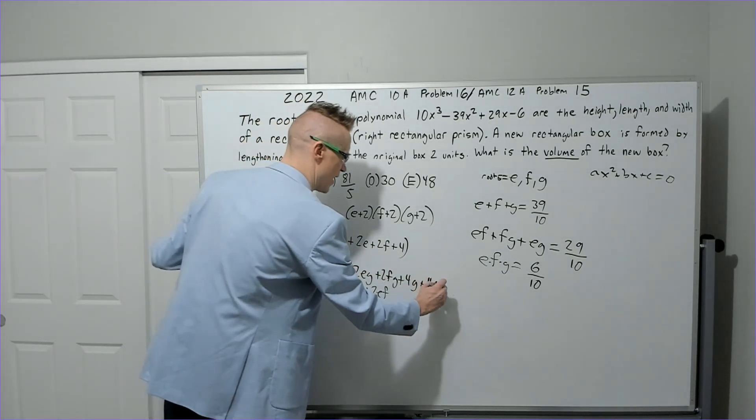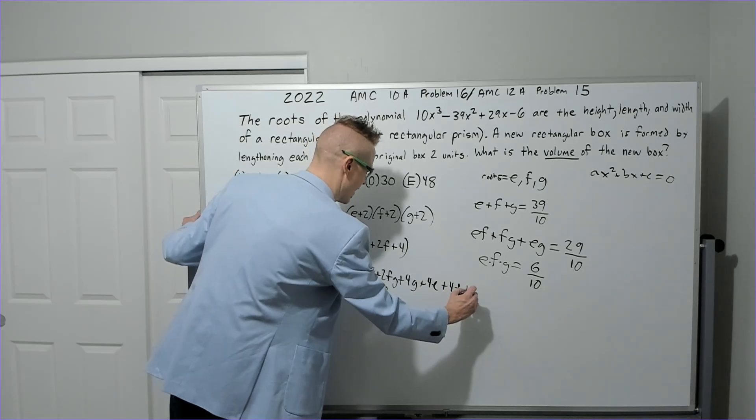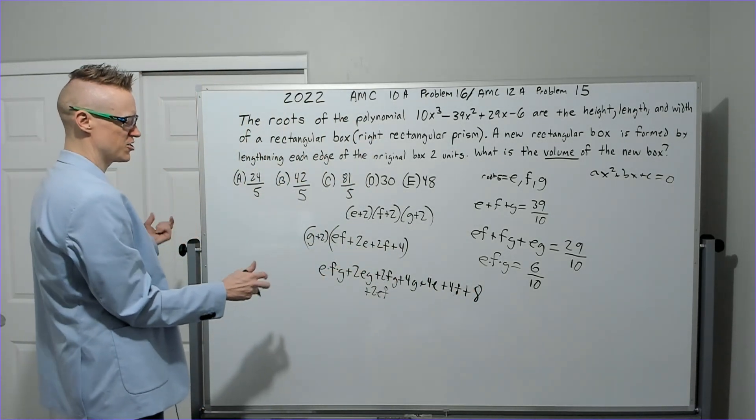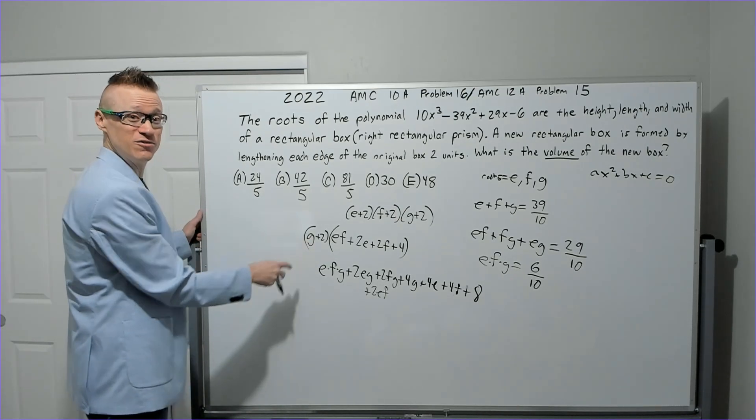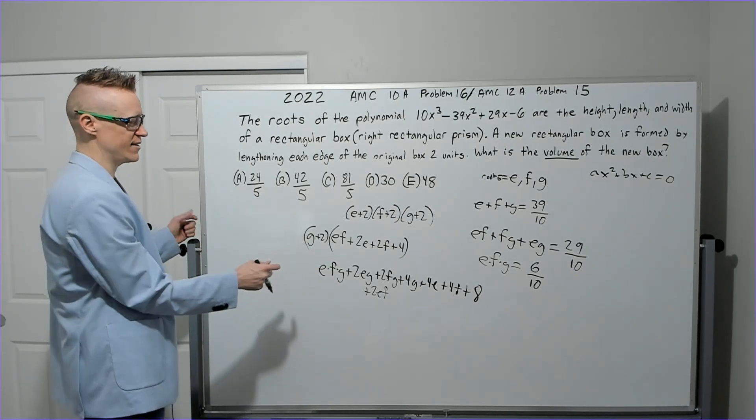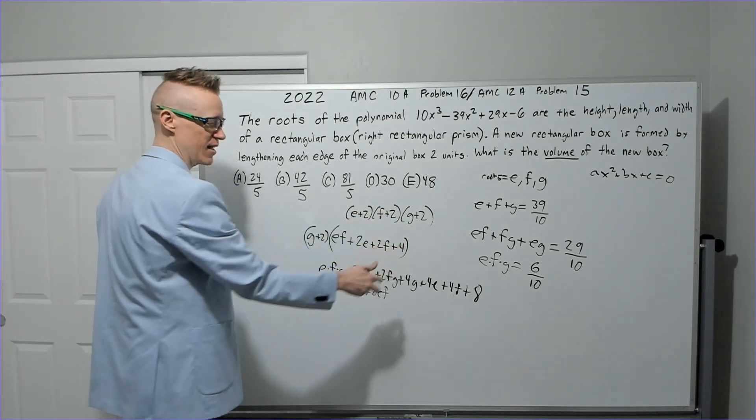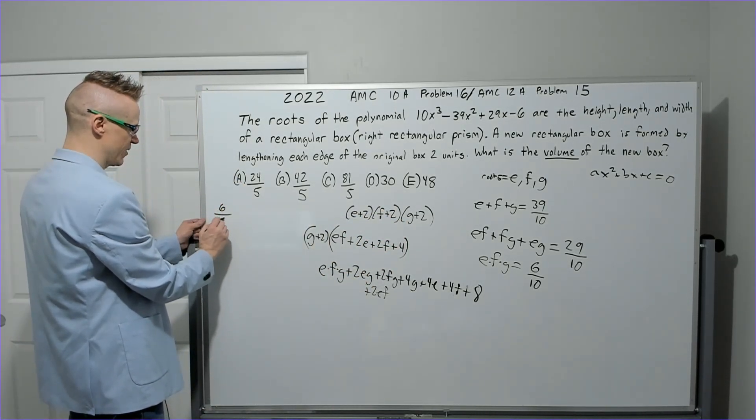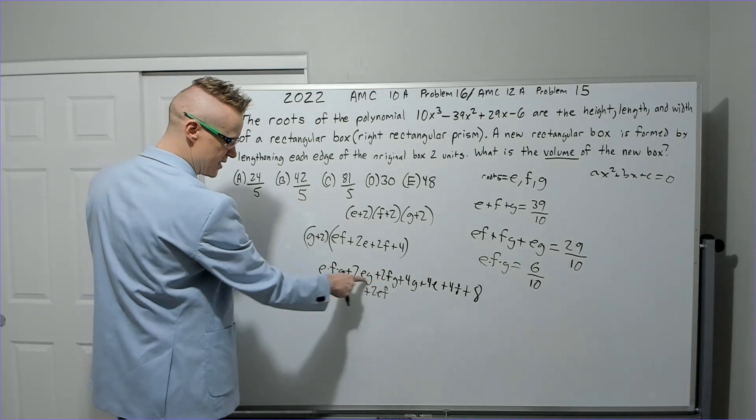Two times 2f is + 4f. And finally, the 2 times 4 makes 8. So now what do we have? This is the new volume, it's the new volume right there, because the volume is length times width times height.